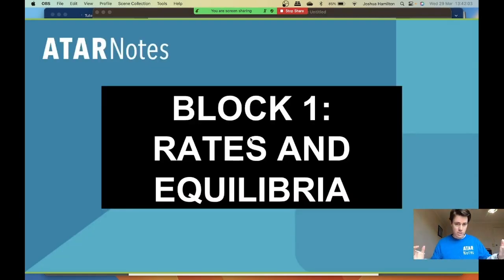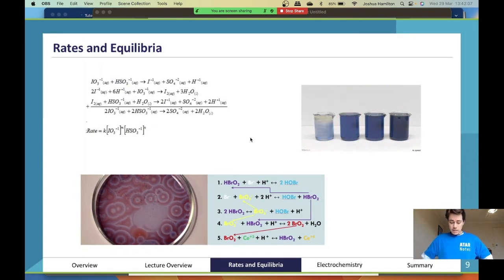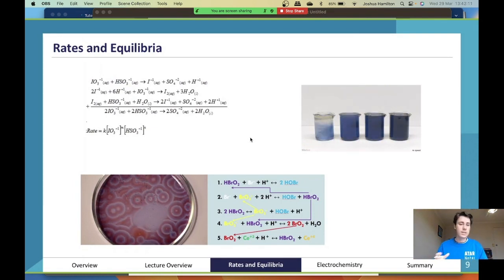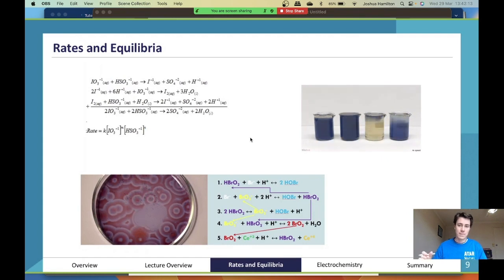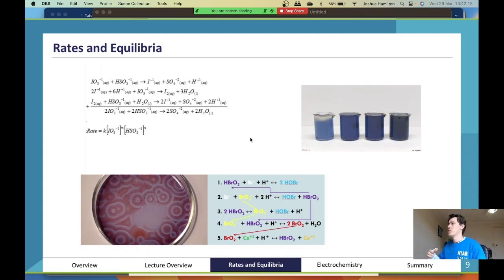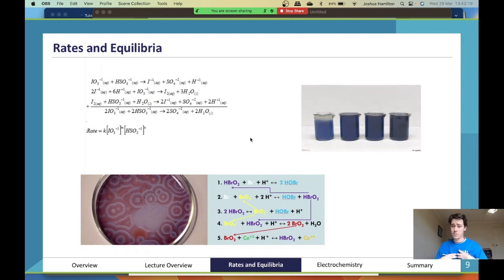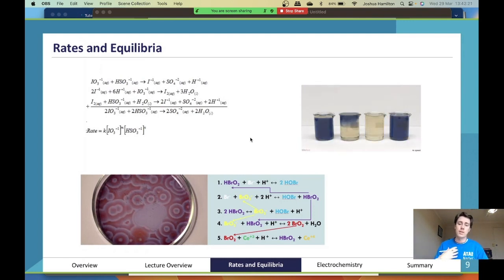Let's start block one, let's jump in: rates and equilibria. It's really important to understand that rates and equilibria is essentially about how do we reach an equilibrium, how do you achieve homeostasis. In the body, an equilibrium is what we refer to as homeostasis.